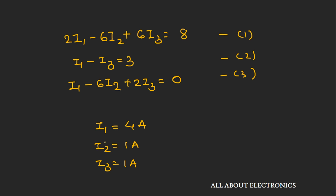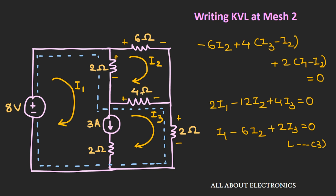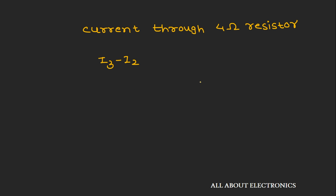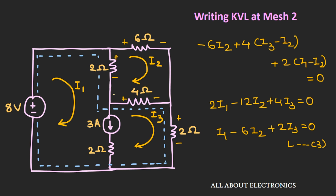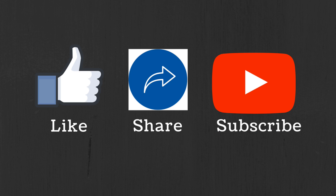You can try by yourself to solve these three equations and verify these values. The current through the 4Ω resistor is I3 − I2 = 1 − 1 = 0A. Using the super mesh technique, we can solve mesh analysis problems where a current source is connected between two meshes, and the number of KVL equations required is reduced by 1. I hope this video helped you understand how to apply the super mesh technique. If you have any questions or suggestions, let me know in the comments. If you liked the video, hit the like button and subscribe for more such videos.